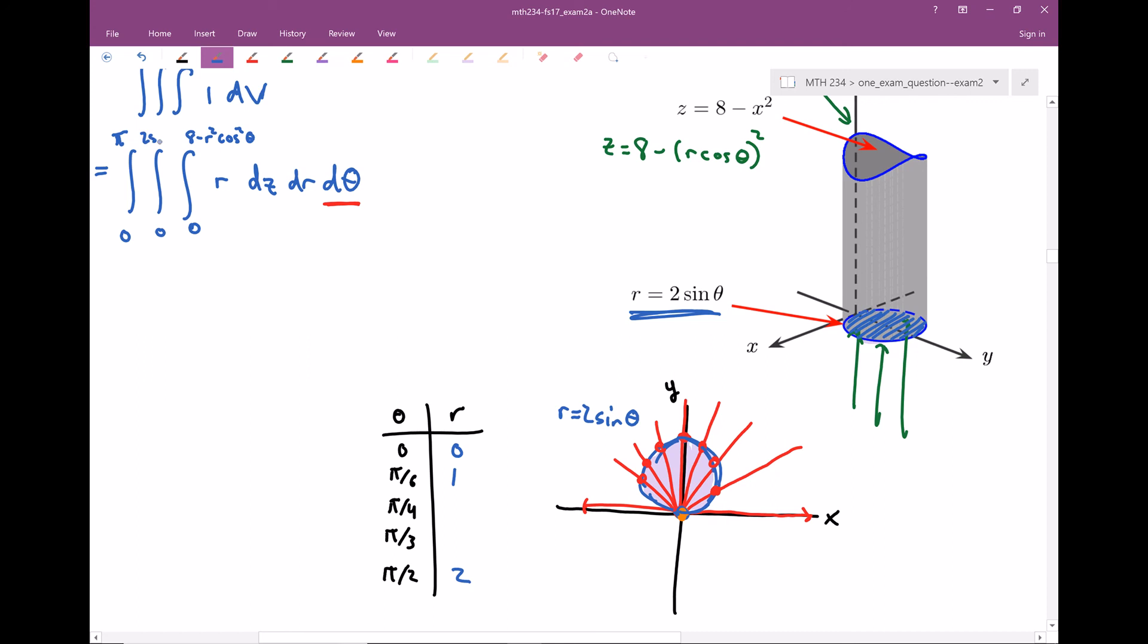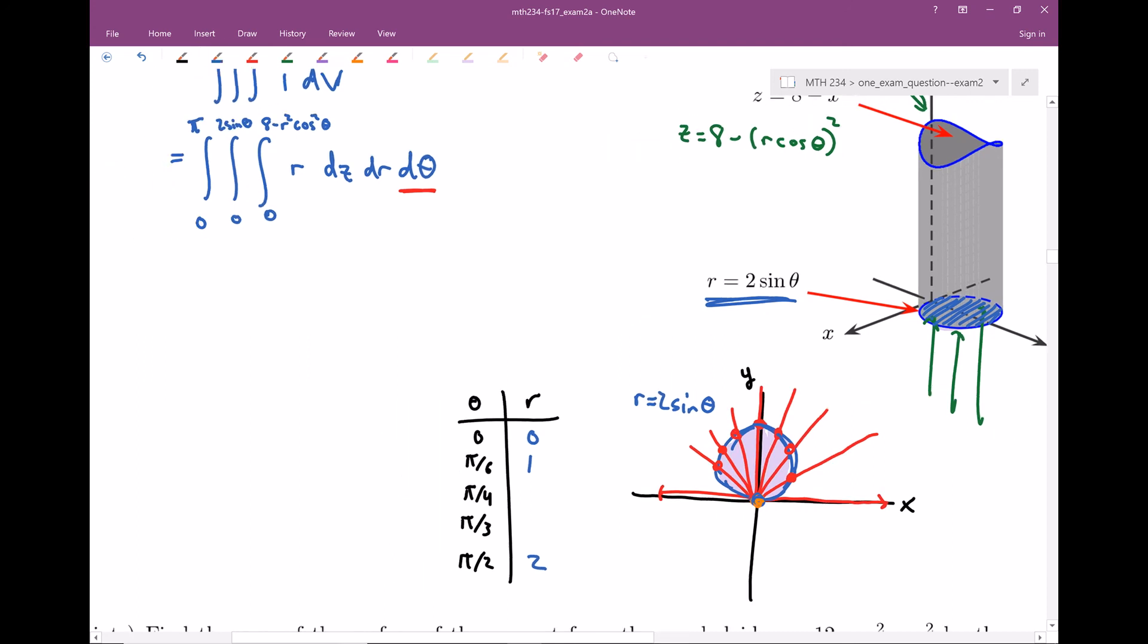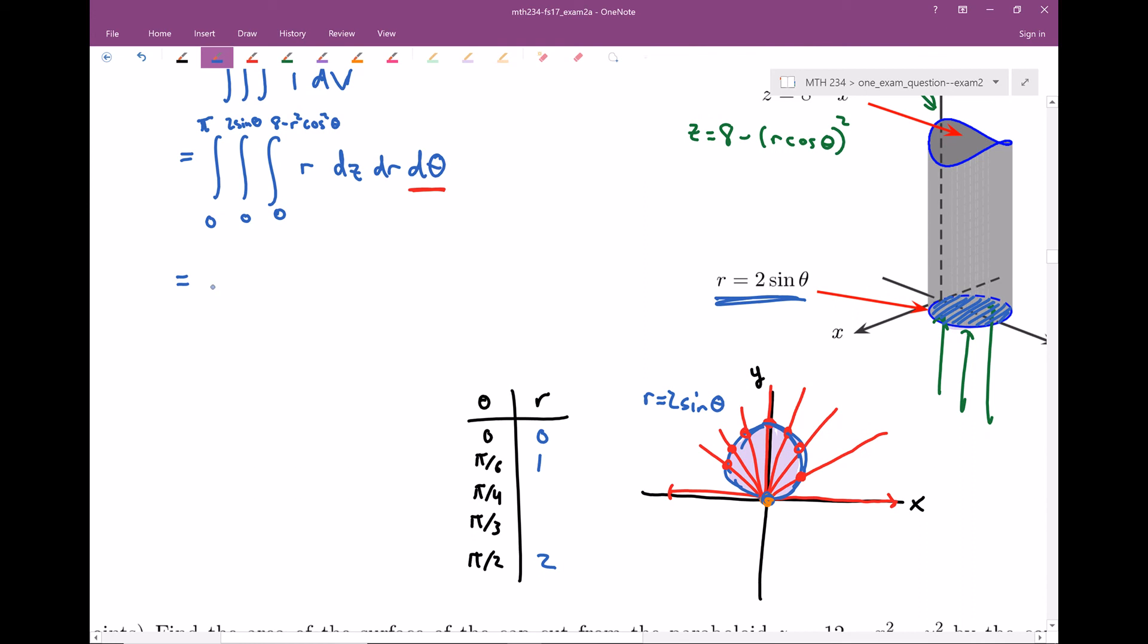So, two sine theta. Let me rewrite this one more time. Zero to pi, zero to two sine theta, the integral from zero to eight minus r squared cosine squared theta. And again, we're integrating the function r, so that's one in cylindrical coordinates. And this is dz dr d theta.